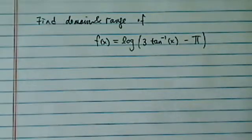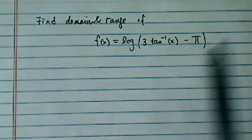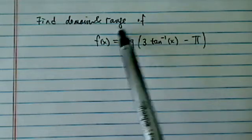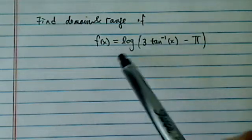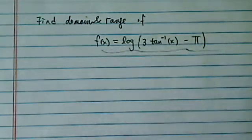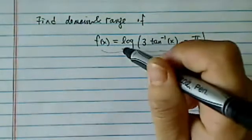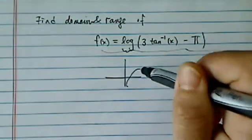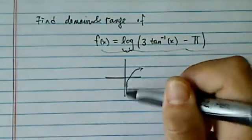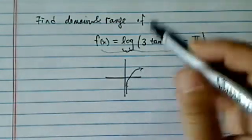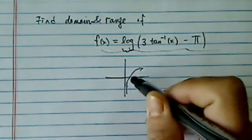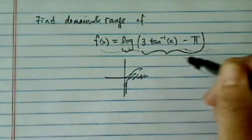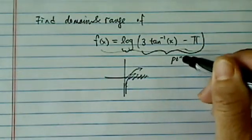Thank you for watching this clip on finding the domain and range of a very odd function. The logarithm function itself — the curve roughly looks like that — it's a monotone increasing function. So the only thing we really have to concern ourselves with is that the argument of the logarithm has to be positive.